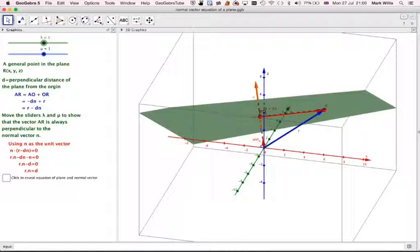So, let's just have a look at that. If we just click here, this is the value of the normal vector. This is the current position of R, and this is what's known as the Cartesian equation of this particular plane.